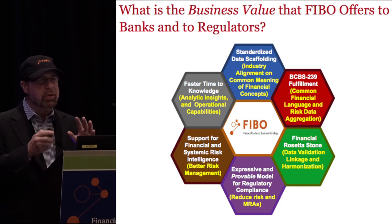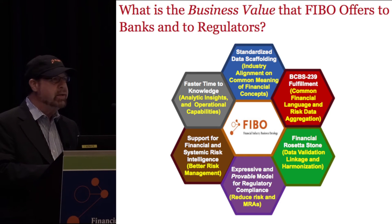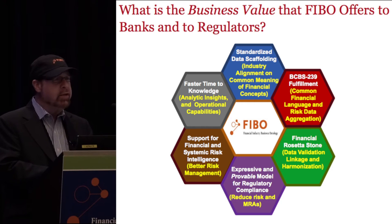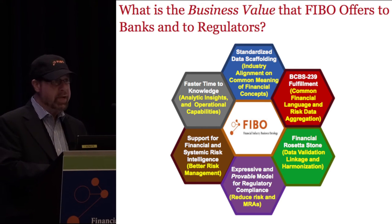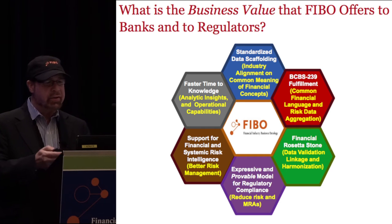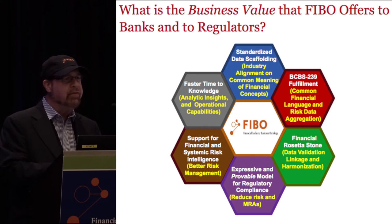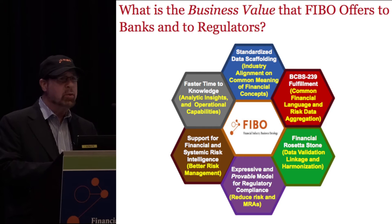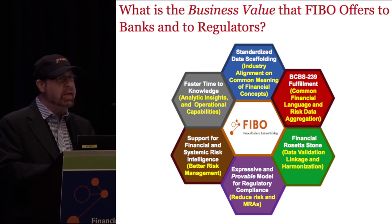If we have a common model, we can link and align information defined in many different legacy databases that all align on common meaning. We can also use FIBO and semantics to improve regulatory compliance from a regulatory reporting point of view and reduce MRAs. We can use the graph of relationships to better manage risk — financial risk, credit risk, market risk. And ultimately, faster time to knowledge means workers at an organization can get answers to their business questions immediately, and customers can have immediate answers to the information they're seeking.